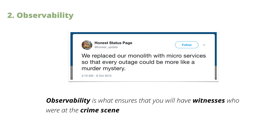I like this tweet from the OniStatus page, which basically compares their microservices outages to modern mysteries. For me, that's kind of how I feel — every outage is like, what happened here? And my take on that is that observability is what ensures that you will have witnesses who are at the crime scene. So you want to have them there right from the very get-go.